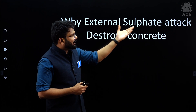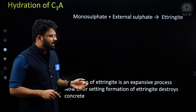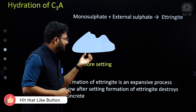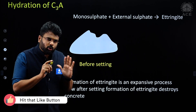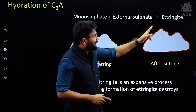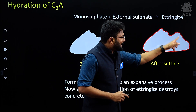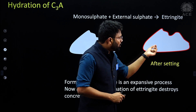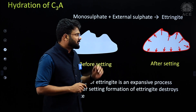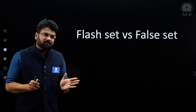Why does external sulphate attack destroy your concrete? That we will understand through ettringite formation. If ettringite forms before setting, there is free expansion and no stresses. But after setting, the boundaries are rigid and expansion causes destruction of your concrete. We will also understand the difference between false set and flash set.